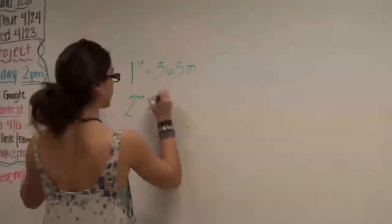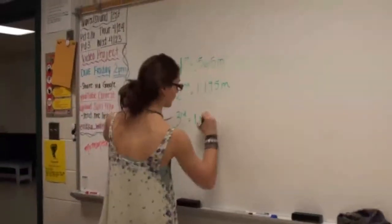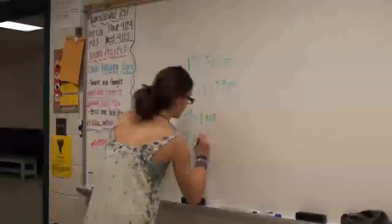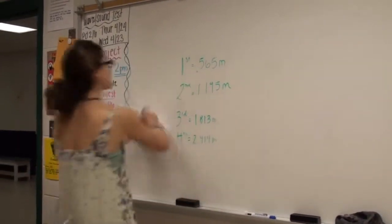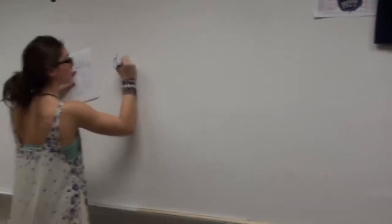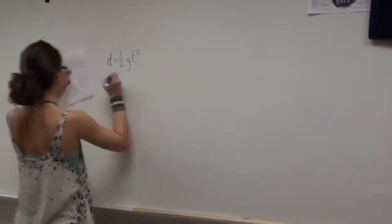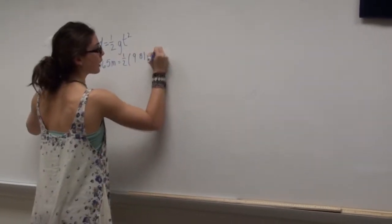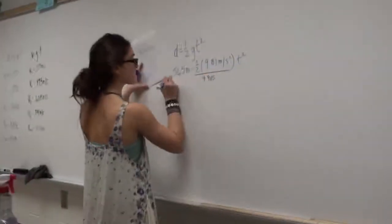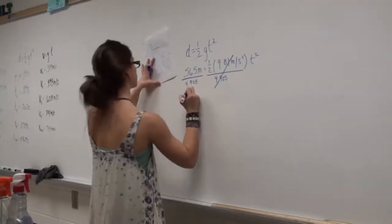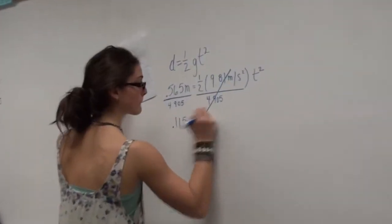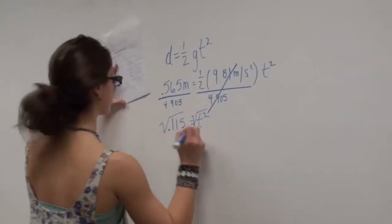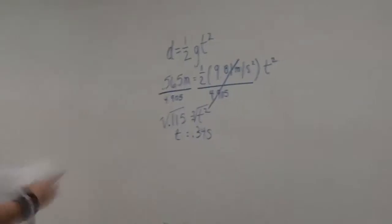We'll start by writing out our known variables. We know the different heights at which velocity checkpoints were measured in meters, so we'll write those out first. By using the formula d equals half g t squared, we can find the exact second that the ladybug passed that distance checkpoint. We plug the distance in for d, plug 9.8 in for g — gravity — and solve for t, time.